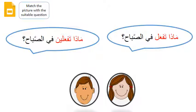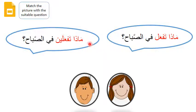Here are the two forms of asking a question: ماذا تفعل في الصباح and ماذا تفعلين في الصباح — both mean 'what do you do in the morning?' One is used for a وَلَد (boy) and the other for a بِنت (girl). Pause the video, go to the slides, and match which form goes for the boy and which goes for the girl.